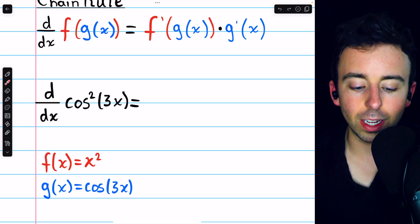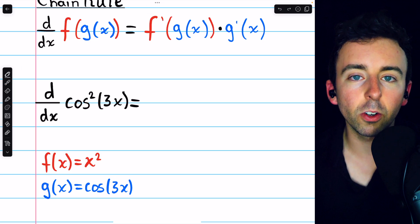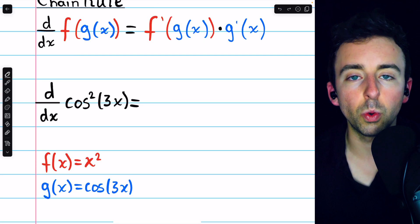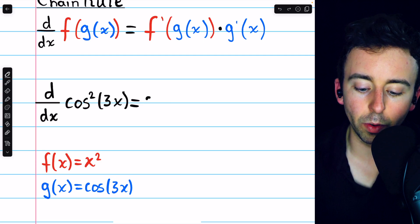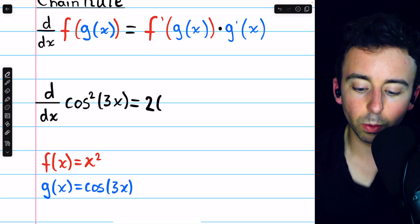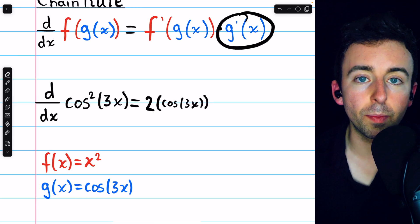Let's begin with f prime of g, that's the derivative of the outside function leaving the inside function unchanged. The derivative of x squared is just 2x, so in this case the derivative will be 2 multiplied by the inside function, which is cosine of 3x. Now we have to multiply by g prime,